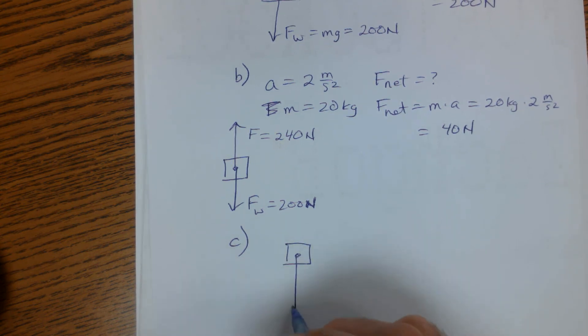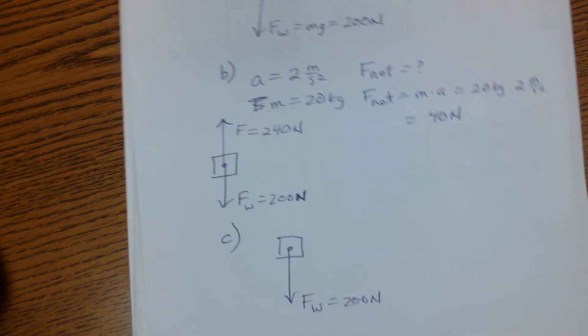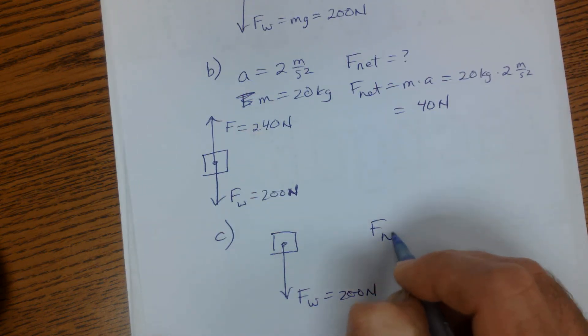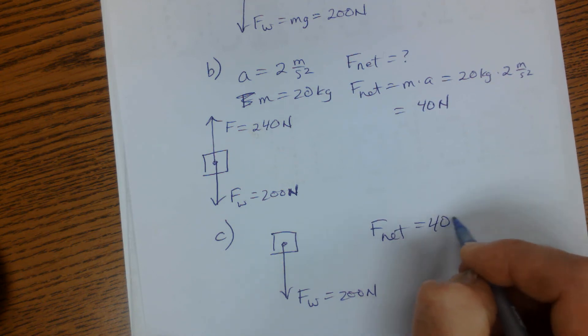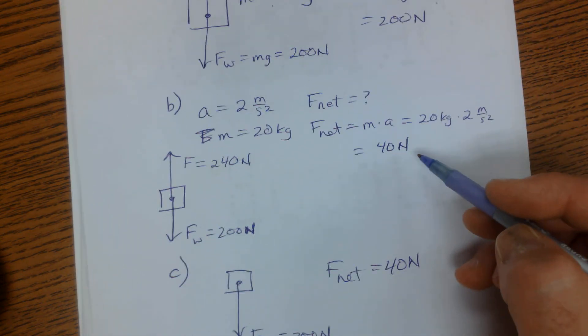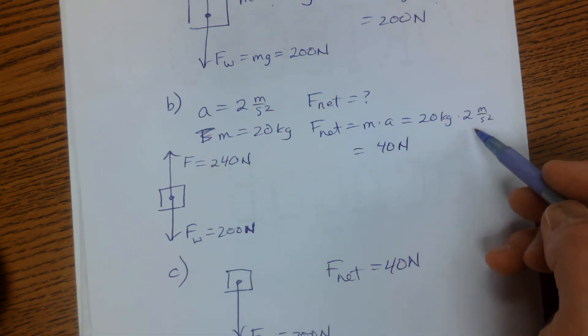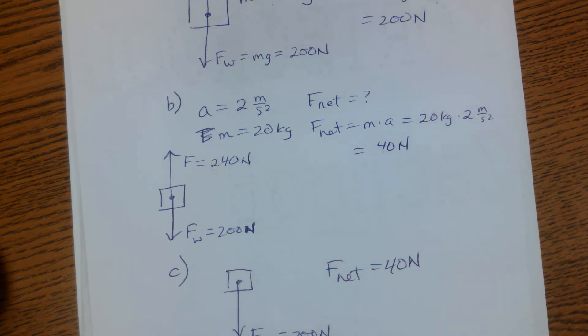This is never going to change. The force of weight is always going to be 200 newtons. And if I need a net force again of 40 newtons, because it's still 2 meters per second squared, it's just the opposite direction. I can't change the weight of the object.